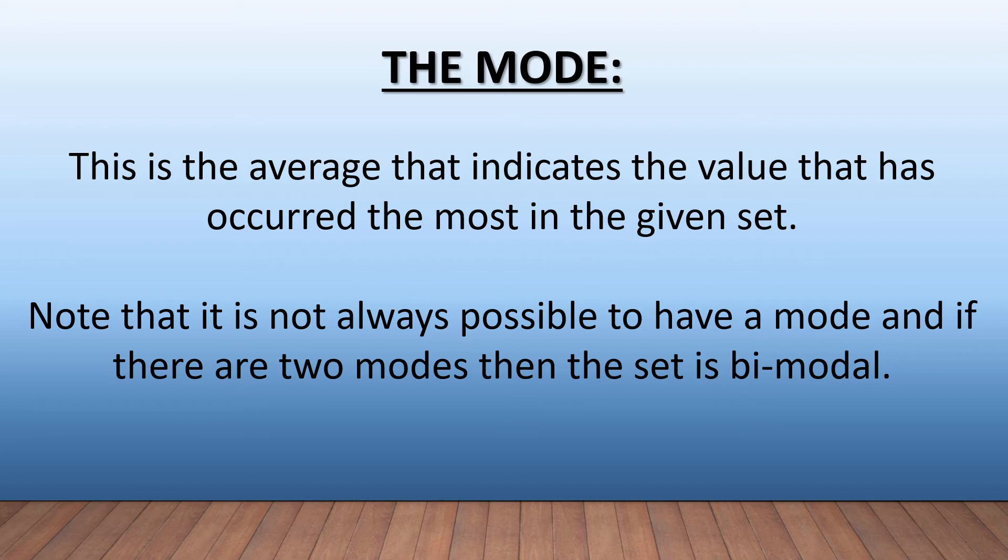Then we've got the mode. Now this is the average that indicates the value that has occurred the most in a given set. Note that it's not always possible to have a mode, and if there are two modes then the set is bimodal.